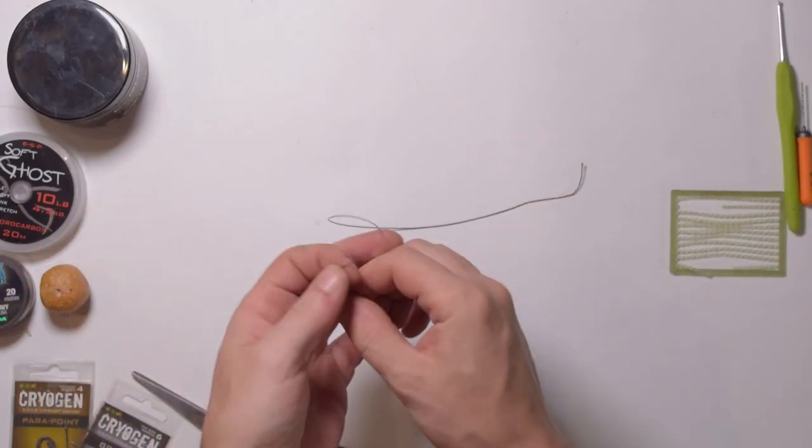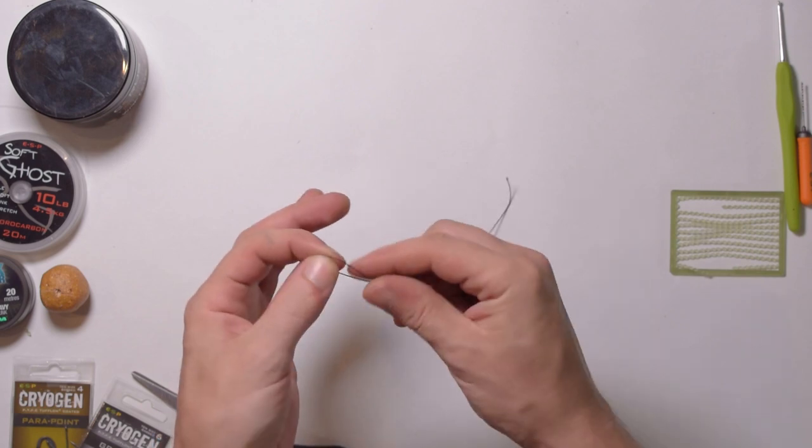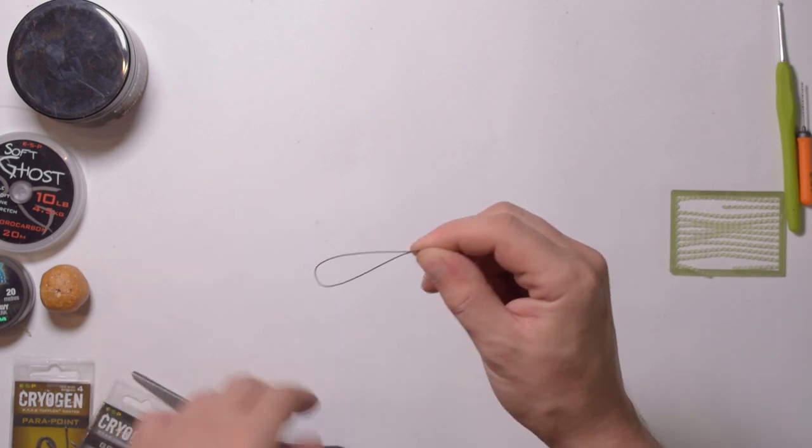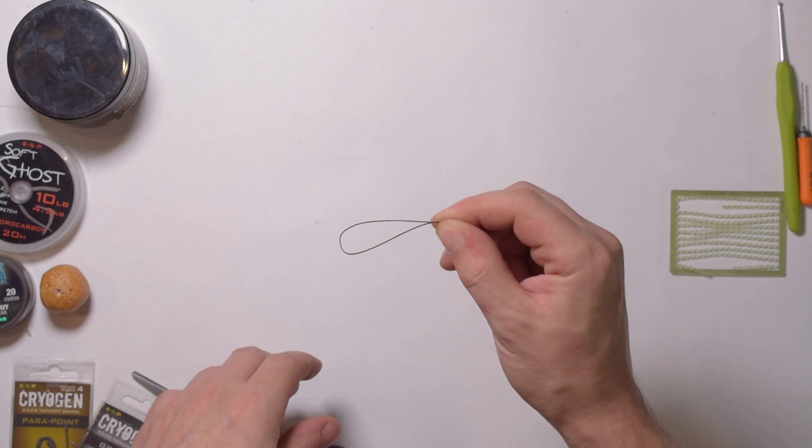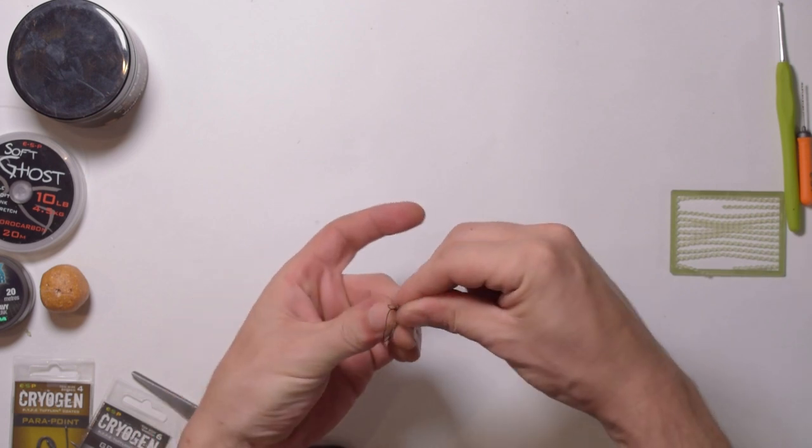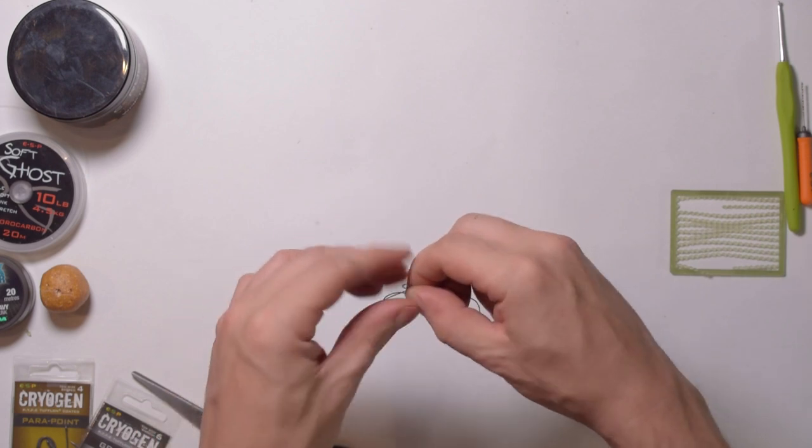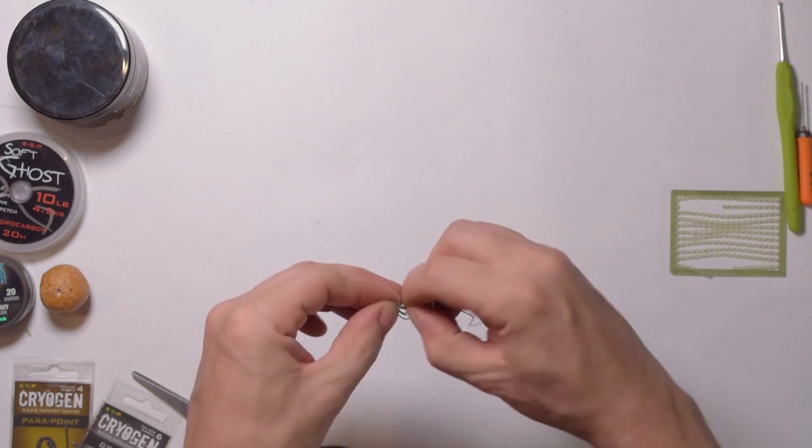So what you just want to do is just pinch the braid together. Make them friends, happy little friends. Now twist this over and just tie it over here. Wrap it twice.